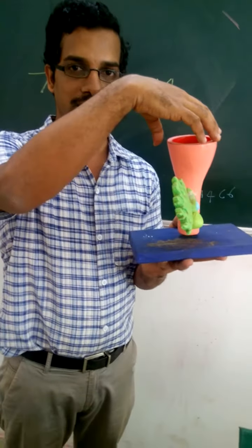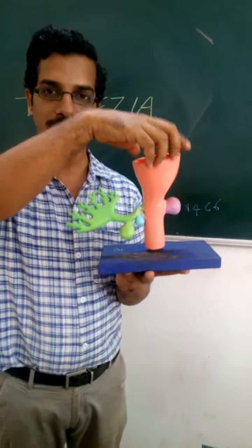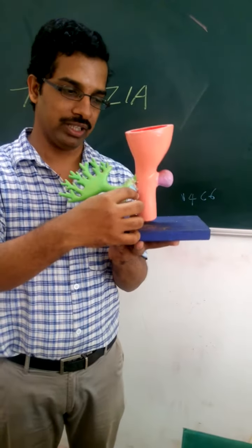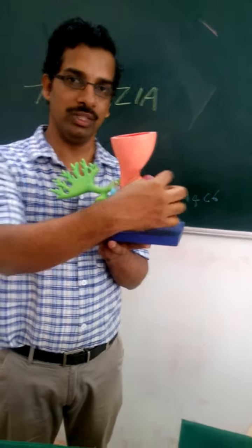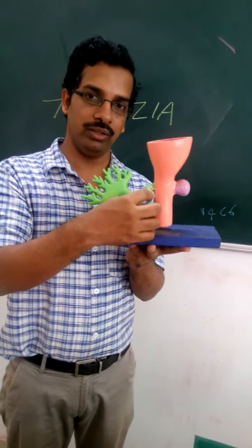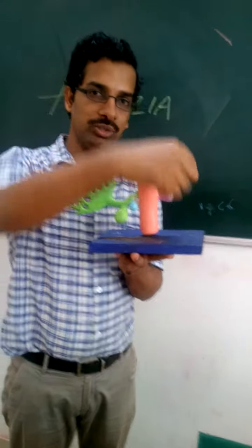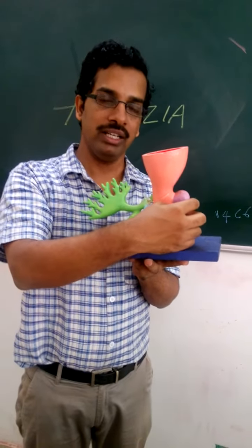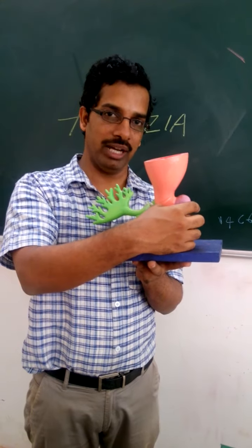With the rotation of the gut, the liver bud will come and settle down on the right side of the abdomen. Along with that, the dorsal pancreatic bud will settle on the left side of the abdomen, whereas the ventral pancreatic bud will rotate 270 degrees and come to lie below the dorsal pancreatic bud, forming the uncinate process and the part of the head of the pancreas.